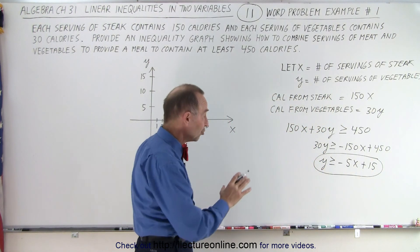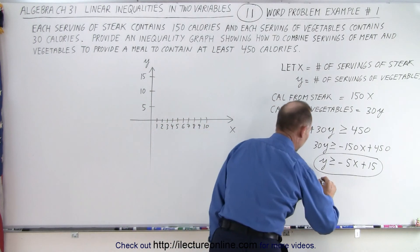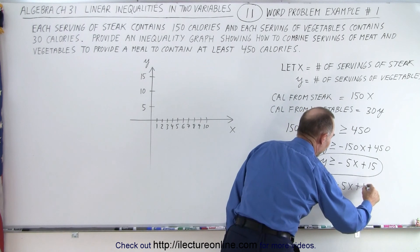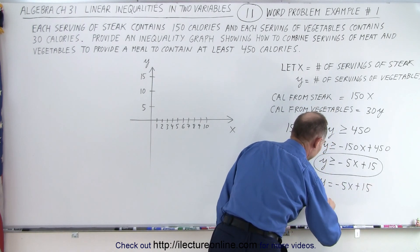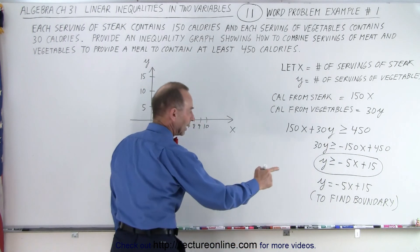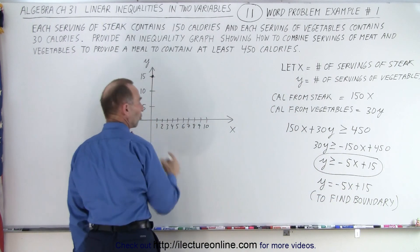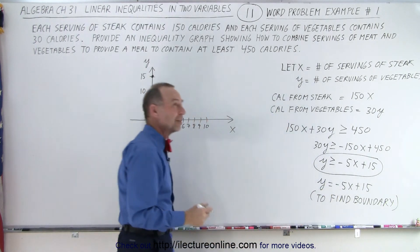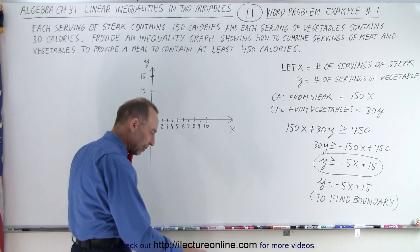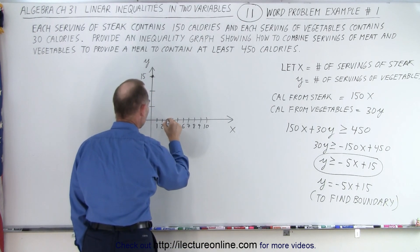We'll change the greater than into an equal sign to find the boundary. So y equals minus 5x plus 15 to find the boundary. The intercept is 15, that's right over here. The slope is negative 5. That means we drop down 5 and go over 1, drop down 10 go over 2, drop down 15 go over 3. So we drop down 15, go over 3, right there.